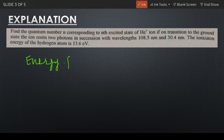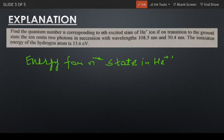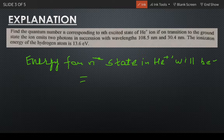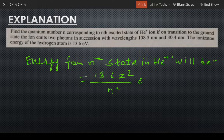So energy for nth state in helium plus will be simply 13.6 z squared by n squared electron volts, which will also be written as the final energy state.